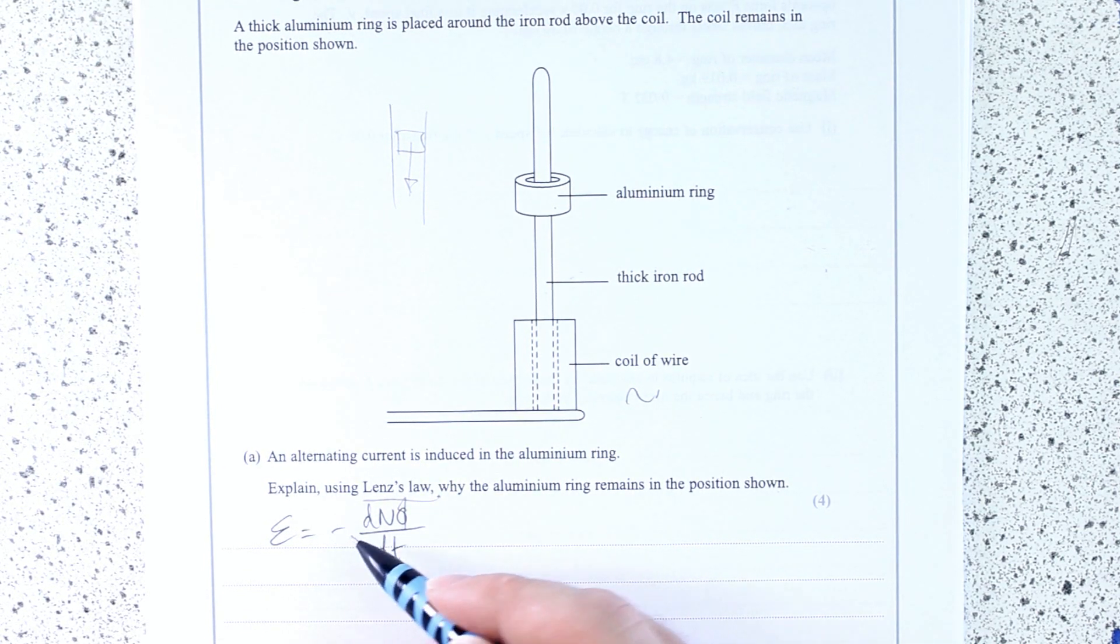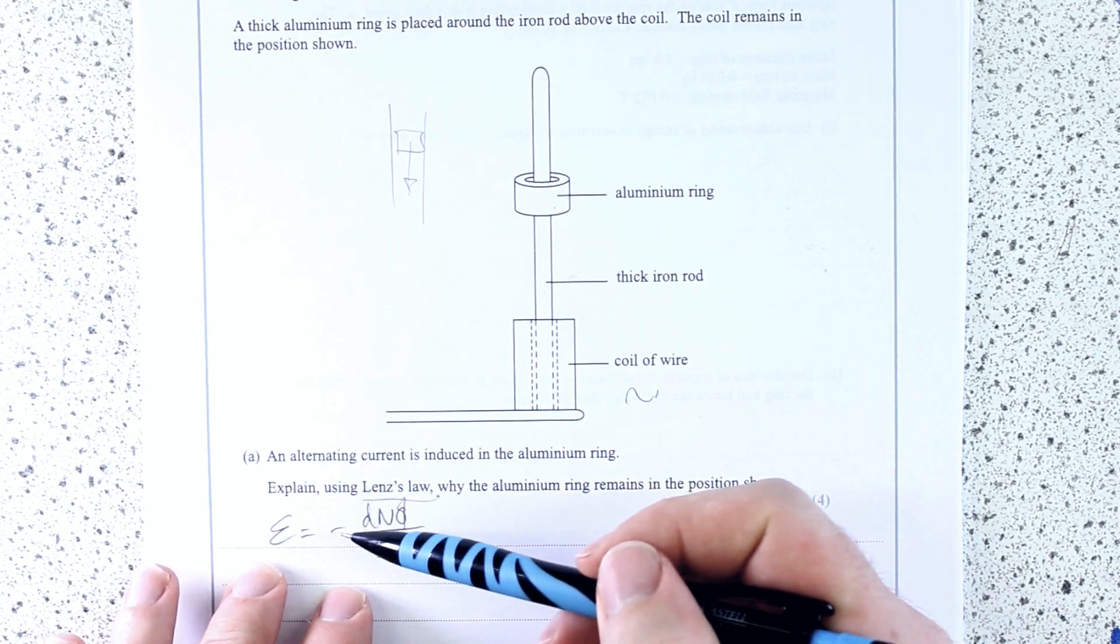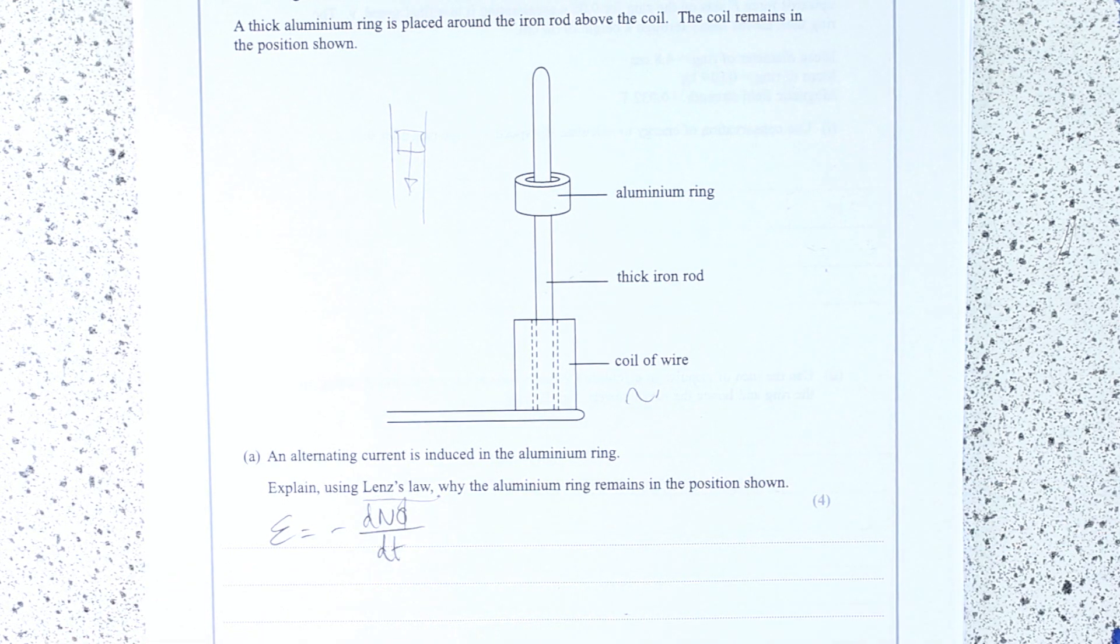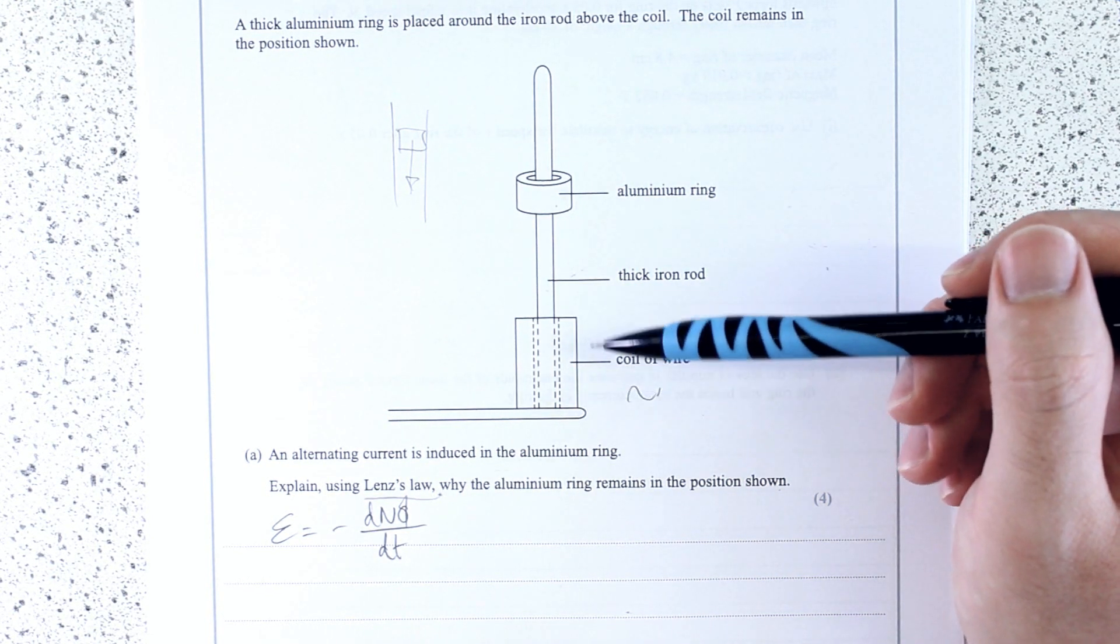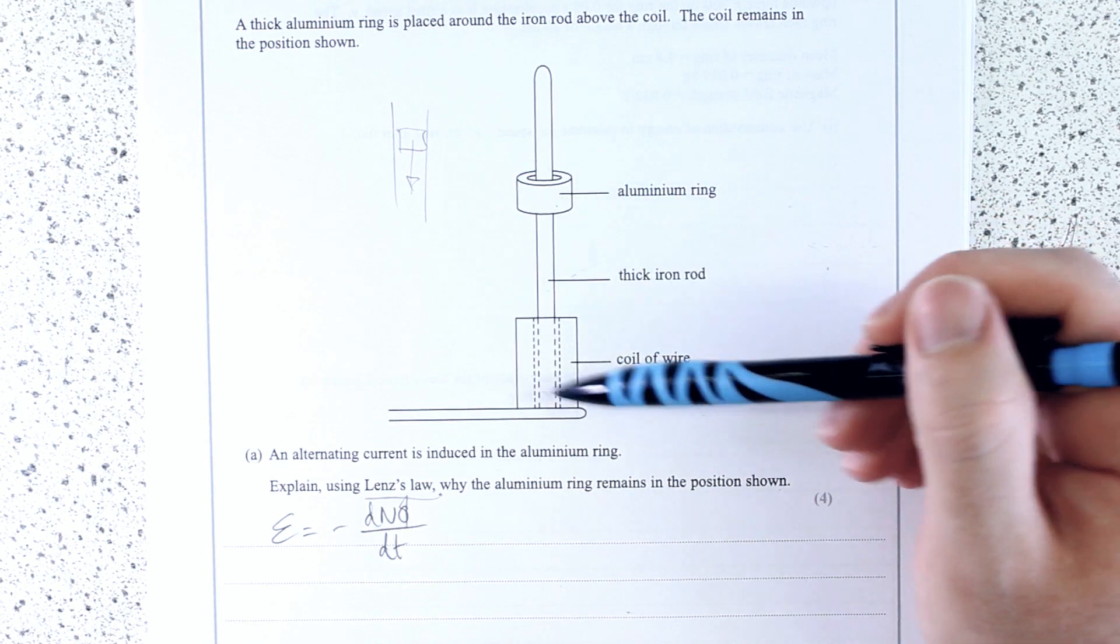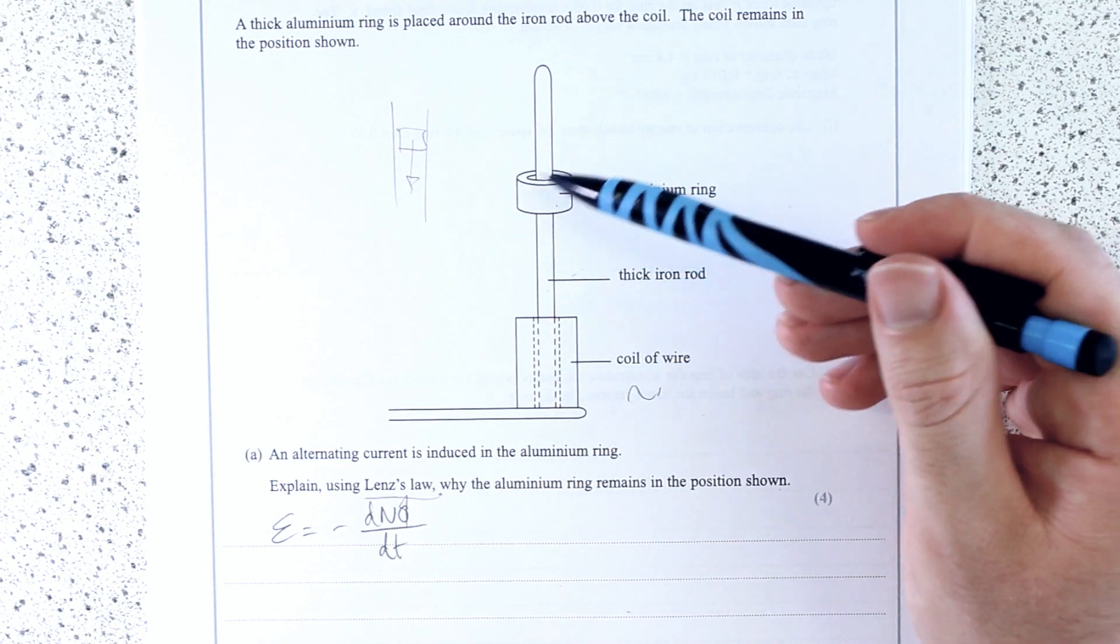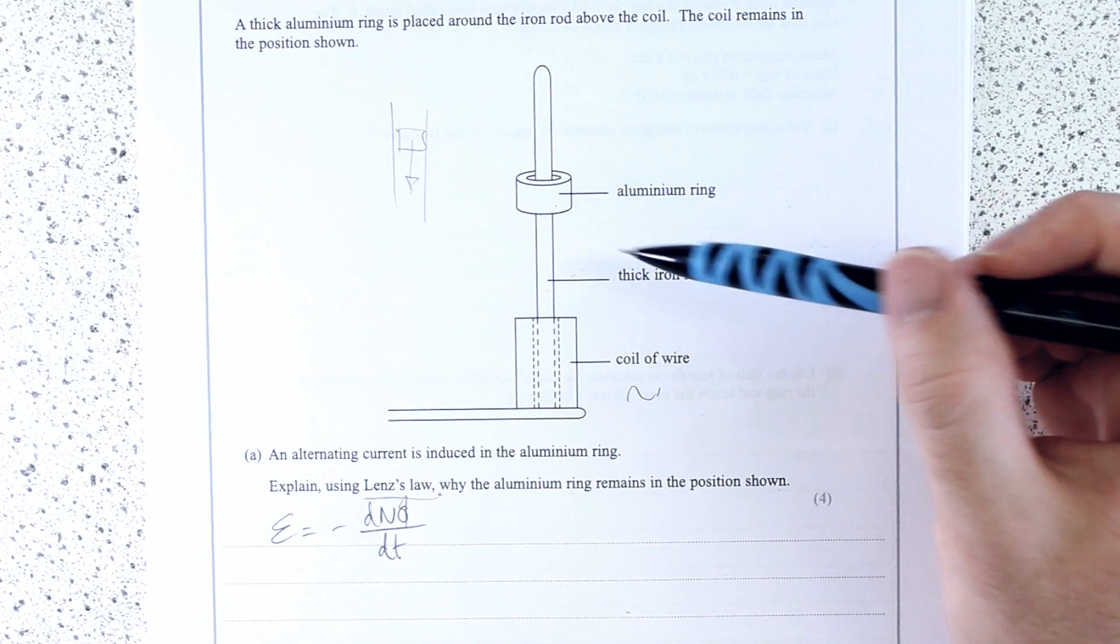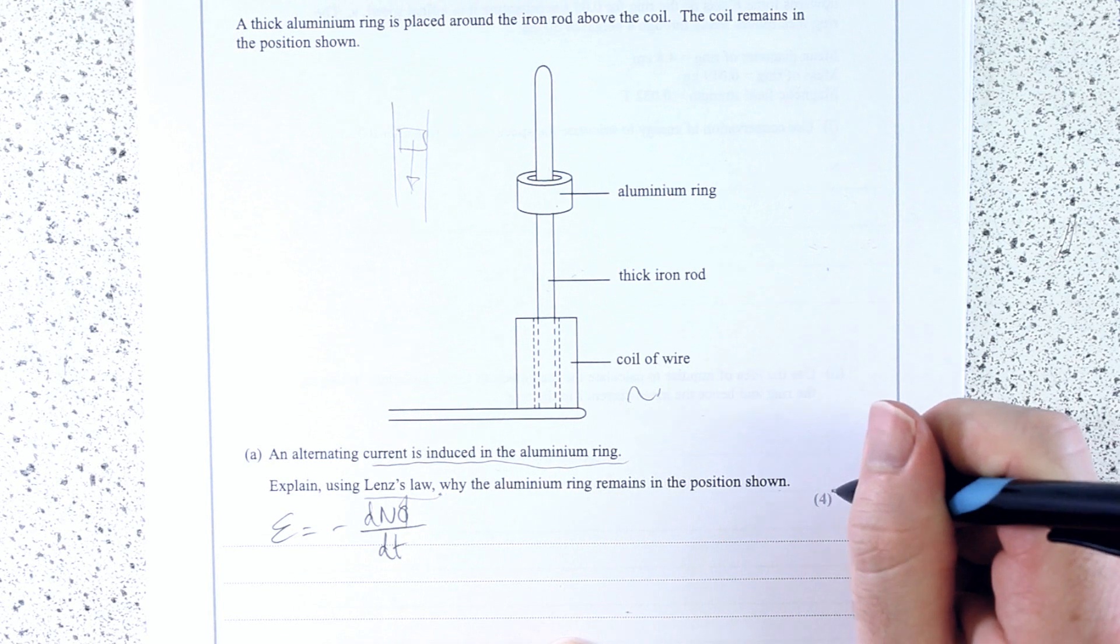This bit is Lenz's law, this negative sign. The rest is Faraday's law, which says that an EMF is proportional to a rate of change of flux linkage. So we can do this. This is essentially then a transformer, isn't it? Because you've got a coil here, and you've got an aluminum ring here. So the EMF here is producing an alternating voltage, a change of voltage, it's inducing a current in the ring here. And we're told the current is induced in the aluminum ring, so that's where our explanation needs to start for four marks.